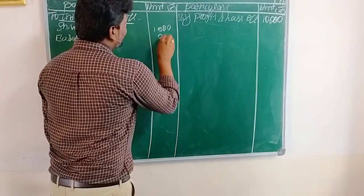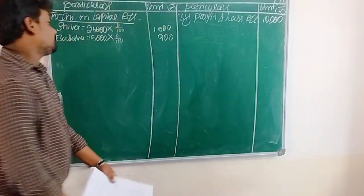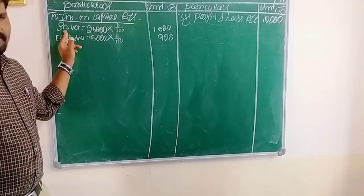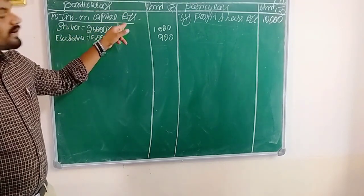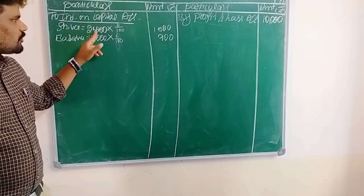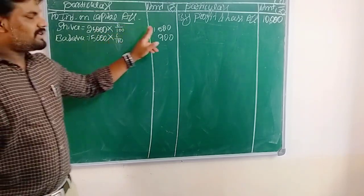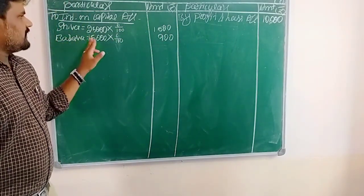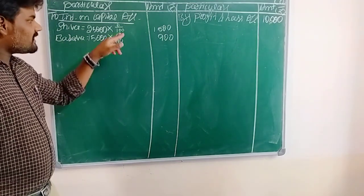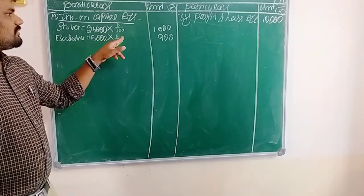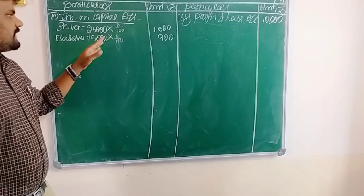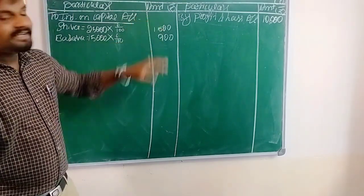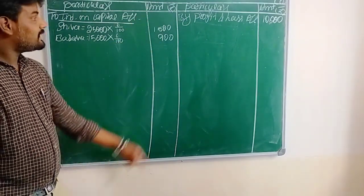Now we need to calculate interest on capital. The rate of interest on capital is 6% per annum. So 25,000 into 6 divided by 100 means we will calculate rupees 1,500 — this is the interest on Shiva's capital. The second one, Basava's interest on capital: 15,000 into 6 divided by 100 means we will get rupees 900. So Shiva's interest is 1,500 and Basava's interest is 900.